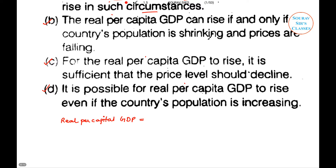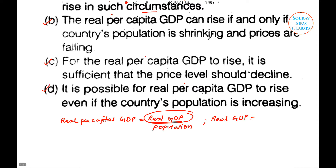Real per capita GDP has a formula: it is Real GDP divided by Population. Now I know population, but I need to define Real GDP. Real GDP is nothing but Nominal GDP divided by the Price Index, or price level.